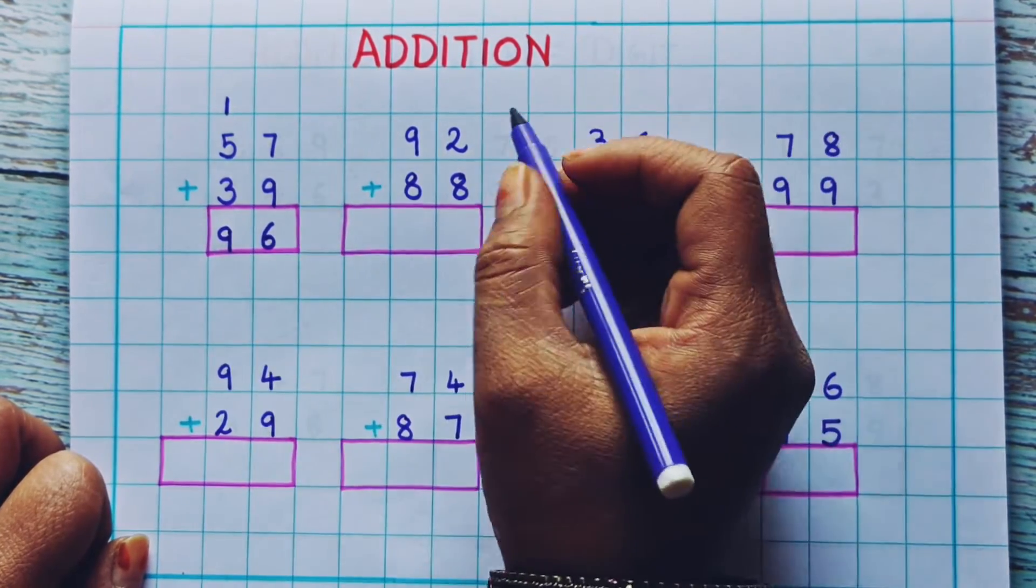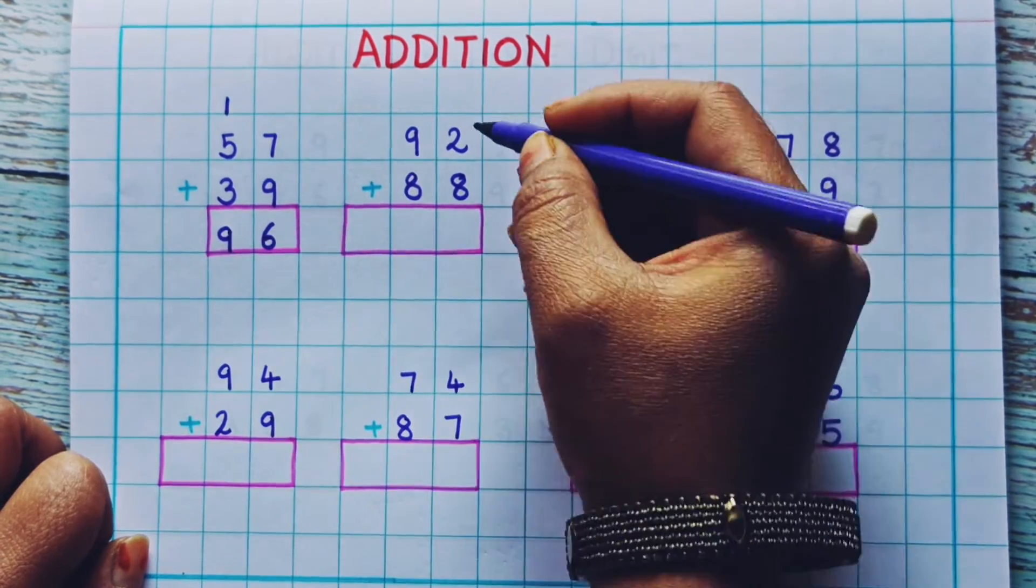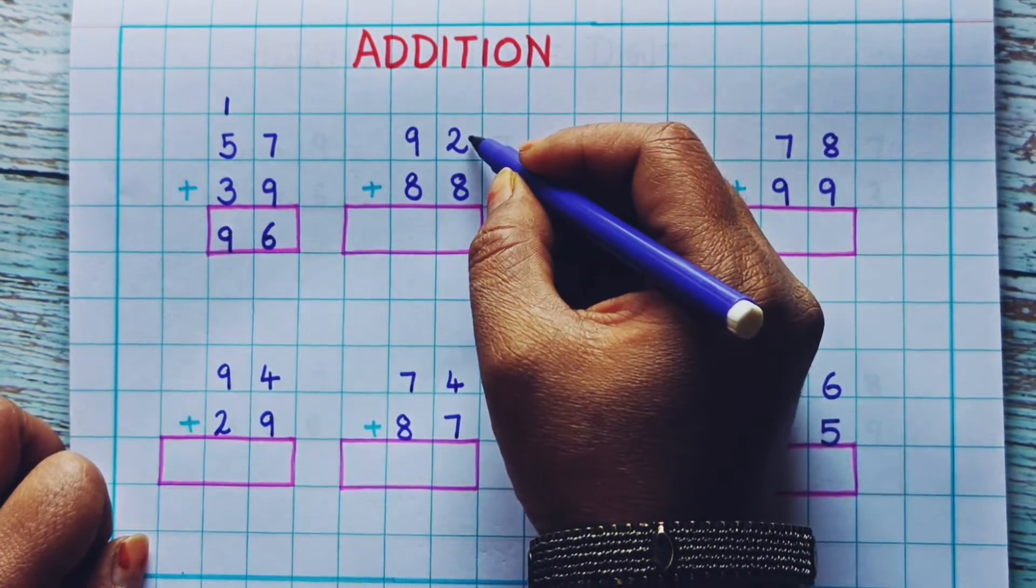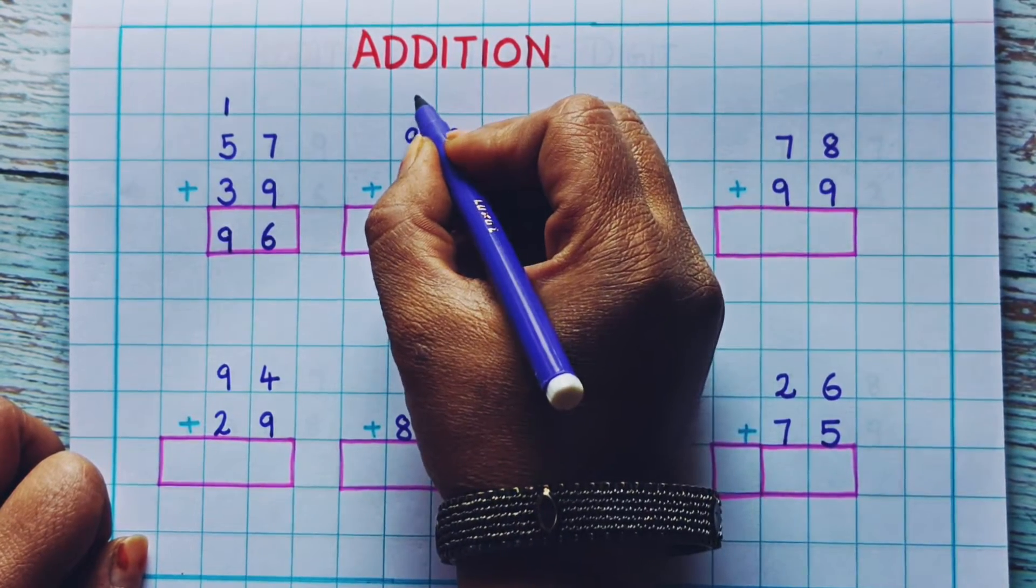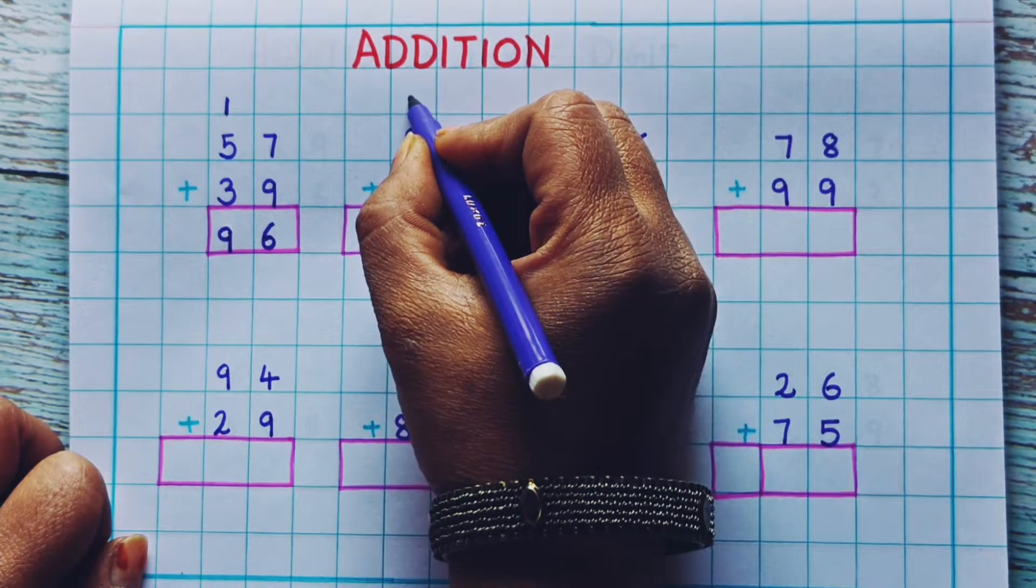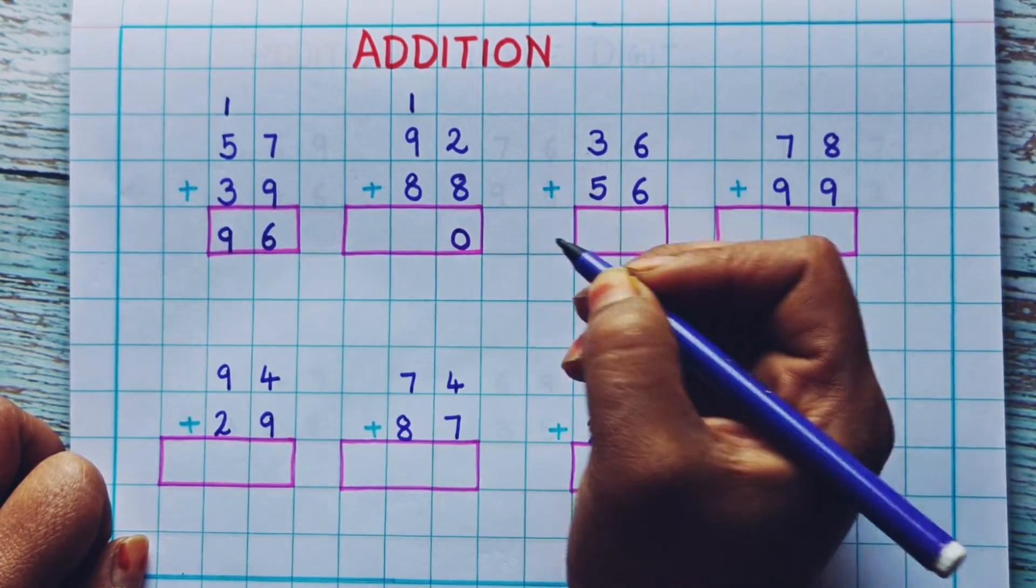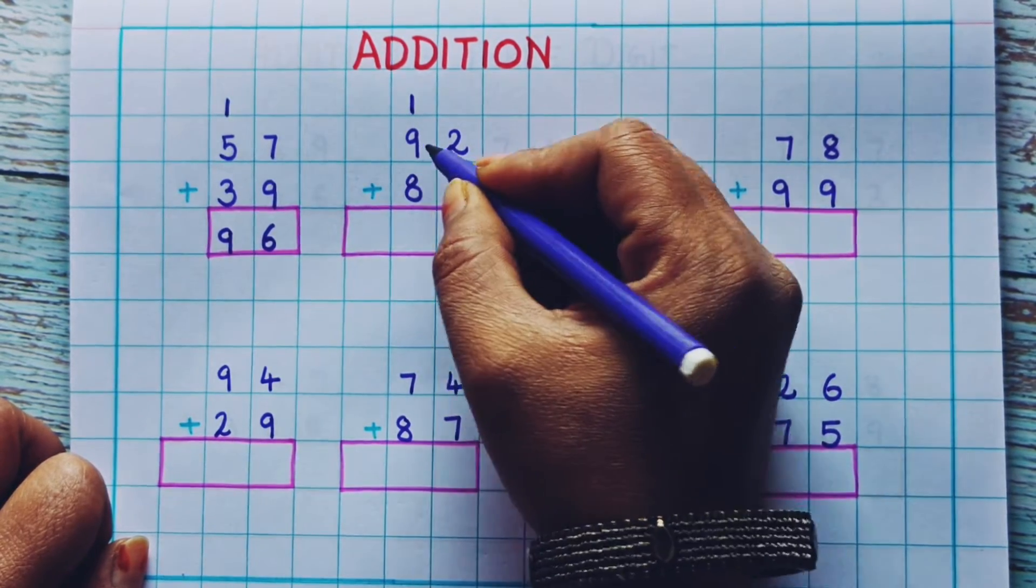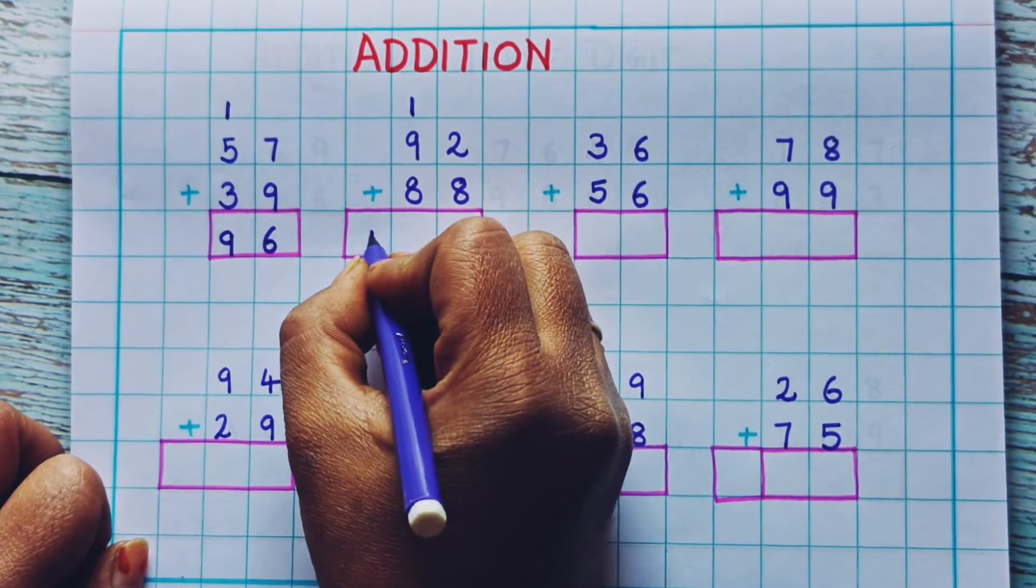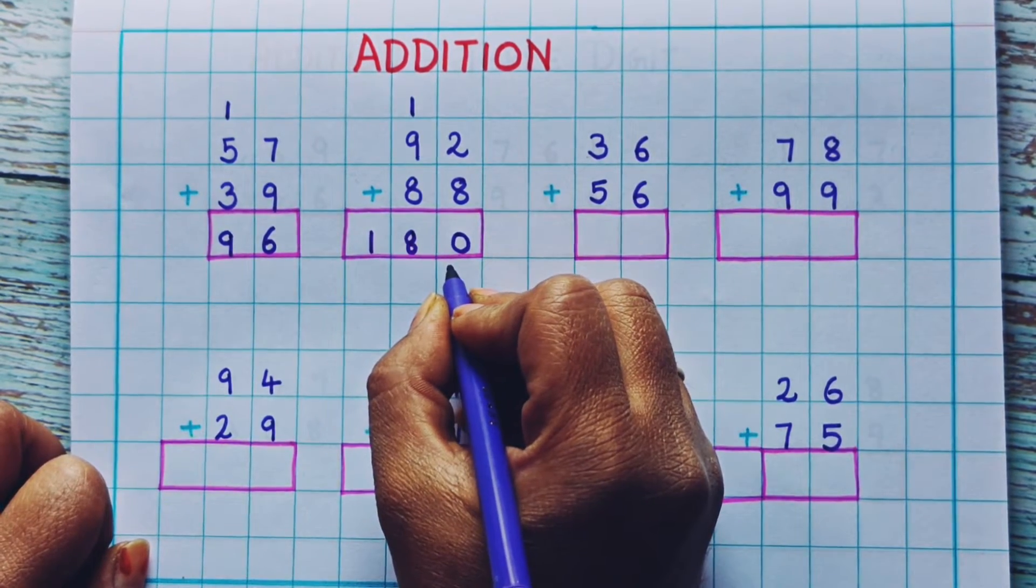Now let's see the next one. 92 plus 88. We will start the addition from the ones place. So 2 plus 8 is 10. 10 is a two-digit number, so again I will write 1 as the carryover and 0 here. Now 1 plus 9 is 10. 10 plus 8 is 18. So here I will write 1, 8. The answer is 180.